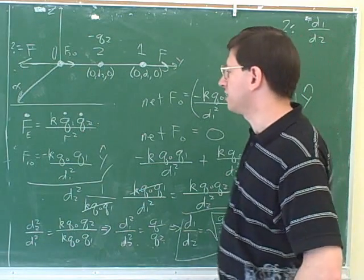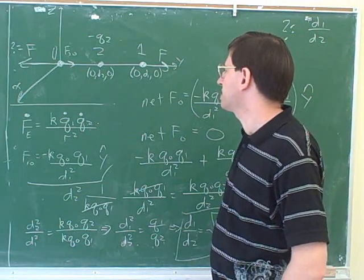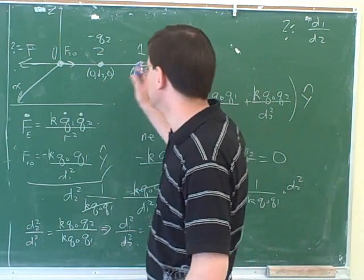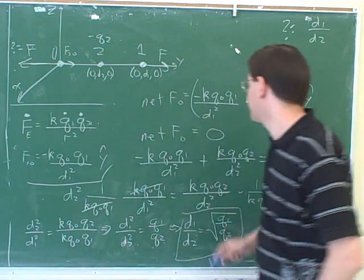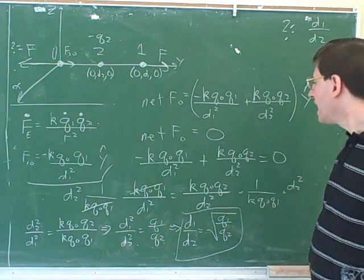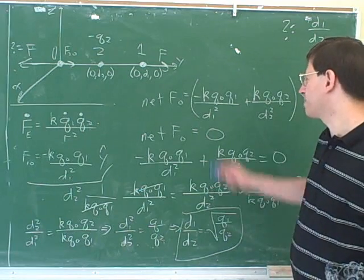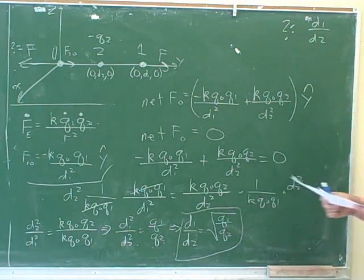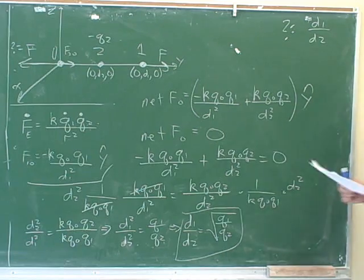Notice how this problem is kind of leading us along step by step. First it asked us to find the force from one charge, then the force from the other charge, and then it asked us to set that net force equal to zero. And again, we could never have done this unless we had put the negative sign here and the positive sign here.